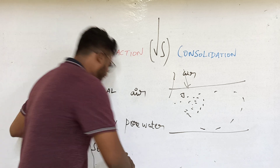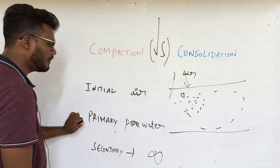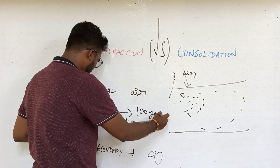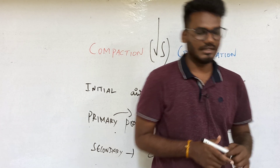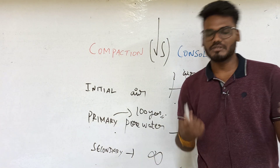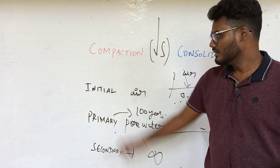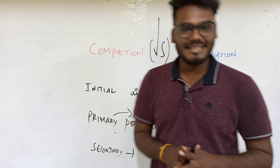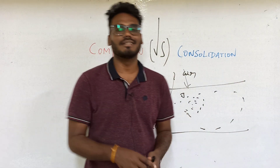Secondary consolidation cannot be achieved. If you could achieve it, the time required is infinite — though theoretically possible, it would require 100 years or more. For an RCC building, primary consolidation is not fully achieved either — only partial primary consolidation, then initial consolidation. Consolidation is important and applicable only for clay soil.